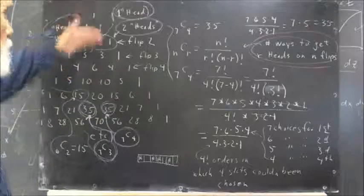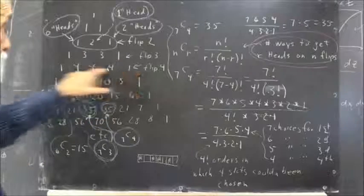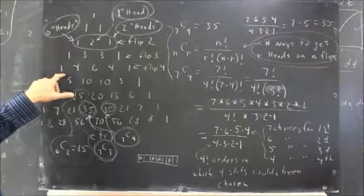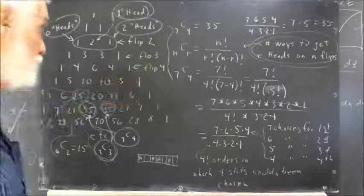So that each row corresponds to flipping a certain number of coins. The next row would be flipping 4 coins. It's 1 way to get no heads, 4 ways to get 1, 6 ways to get 2, 4 ways to get 3, 1 way to get 4.